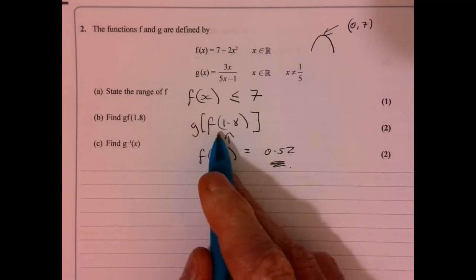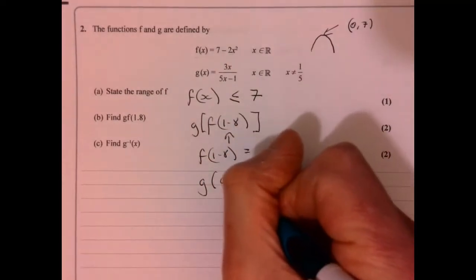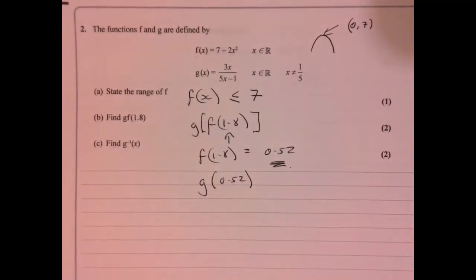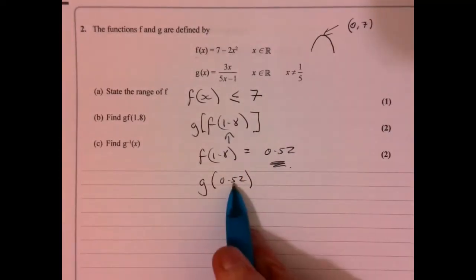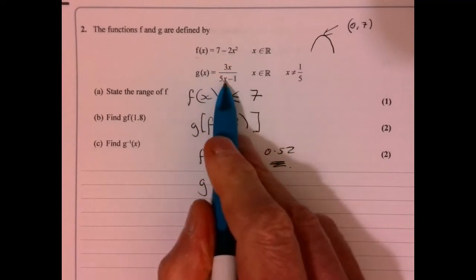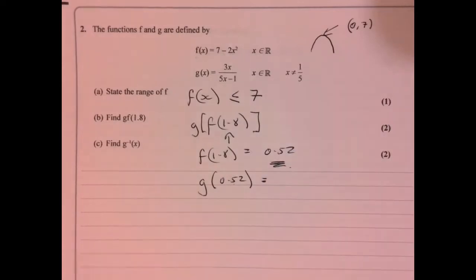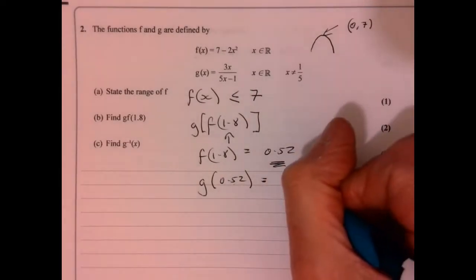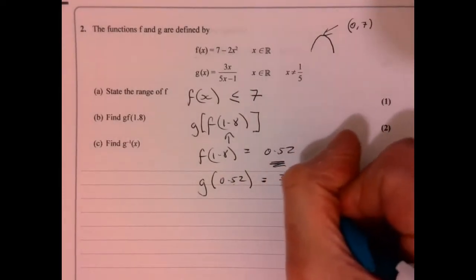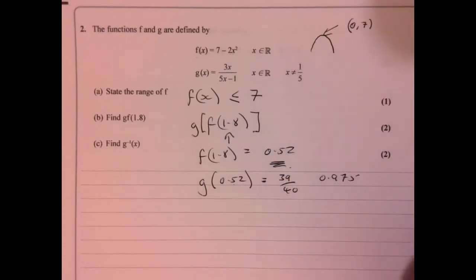Now I'll feed 0.52 into function g. So just feed that in - that's putting 0.52 into this part here. Use your calculator for that bit if you want to. If you do that, it works out to be 39 over 40, or if you want to write it as a decimal, 0.975.